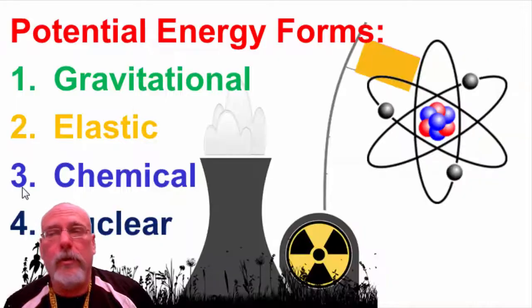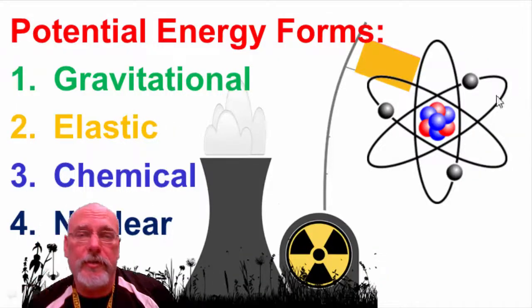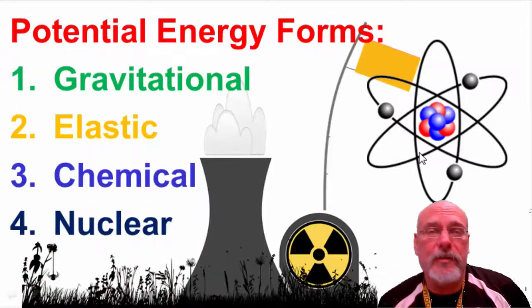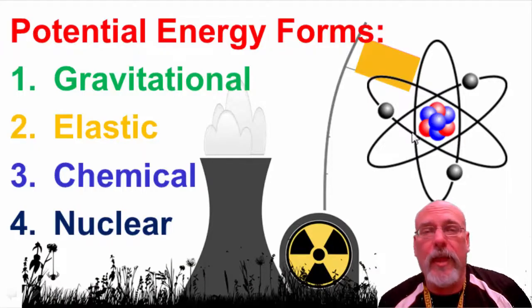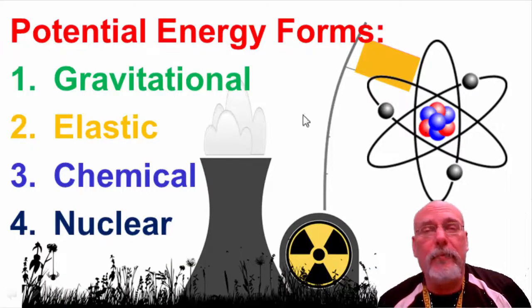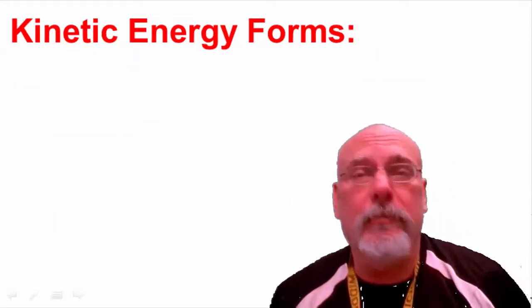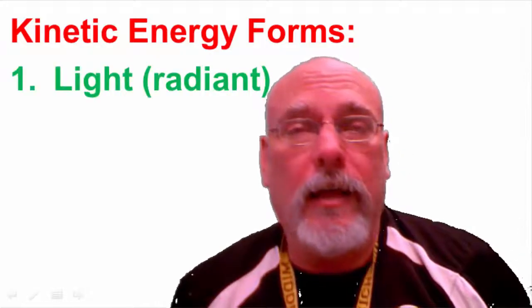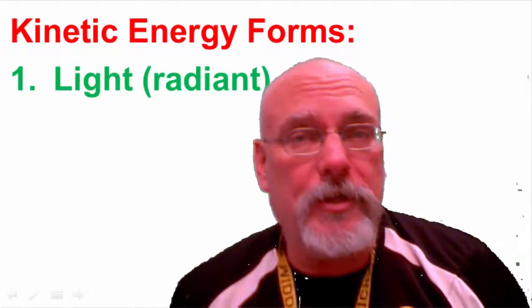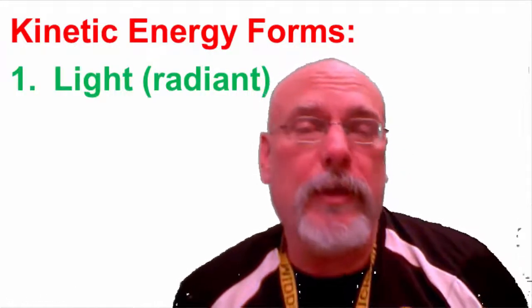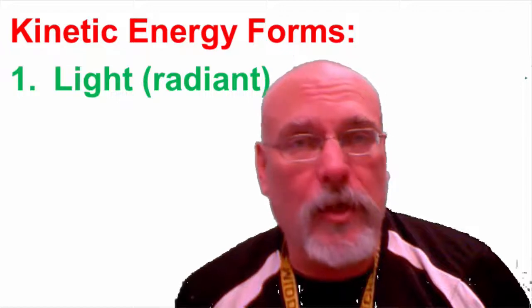Nuclear potential energy is the energy stored in the atom itself. It's not something we can demonstrate in class, but if you break apart the nucleus of an atom it will release a tremendous amount of energy. Moving on to kinetic energy forms: light energy, sometimes called radiant energy, is one example — think of a flashlight or a laser, or even ultraviolet light you can't see.